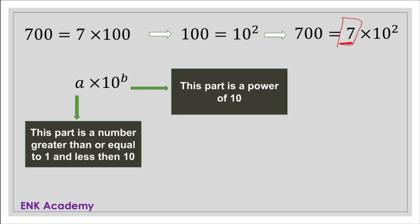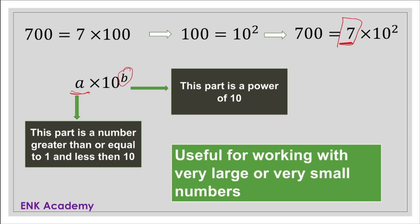So, per definition, when you write a number in standard form, it's putting the number in two parts, where the first part is a number that is greater than or equal to 1 but less than 10 — this is called 'a' — and the second part is a power of 10. This notation is useful for working with very large and very small numbers.